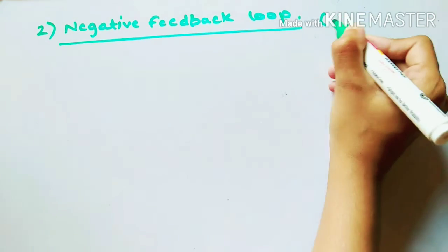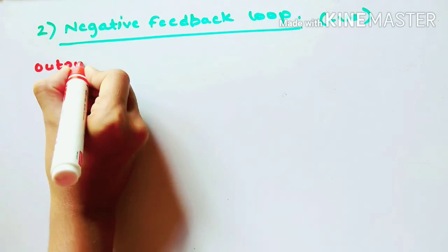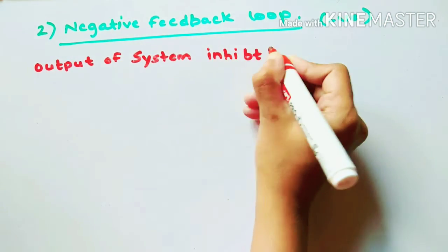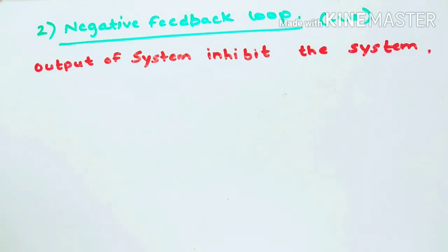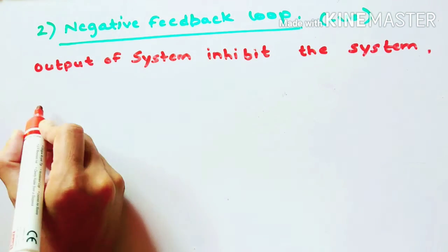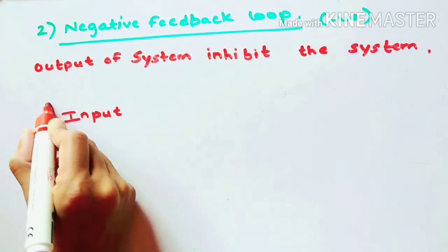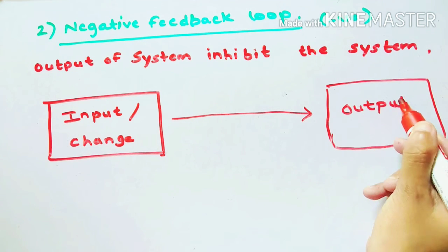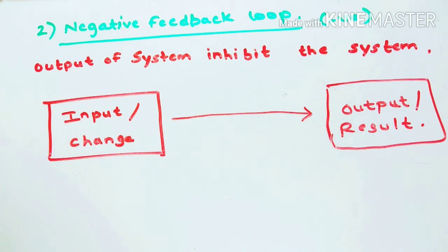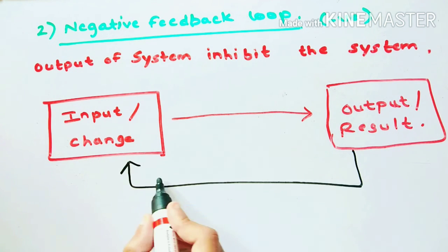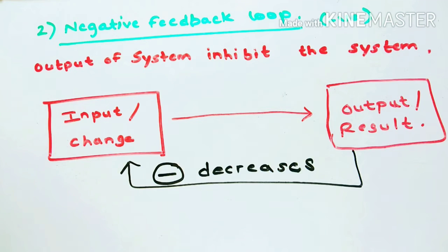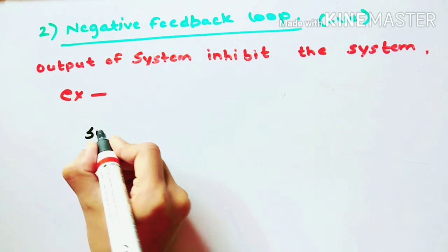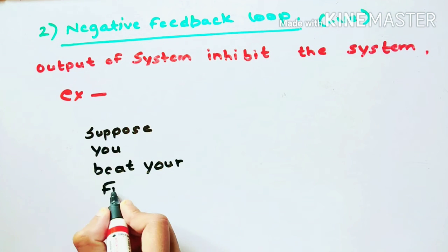Now let's study the second type — negative feedback loop. In a negative feedback loop, the output of the system inhibits the system, meaning when there is a change and this change produces an output, that output will decrease or inhibit the change that is the input.